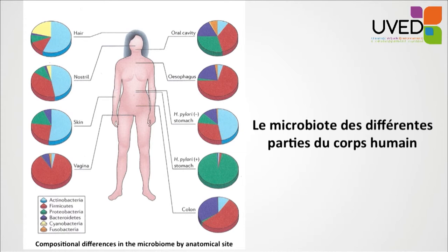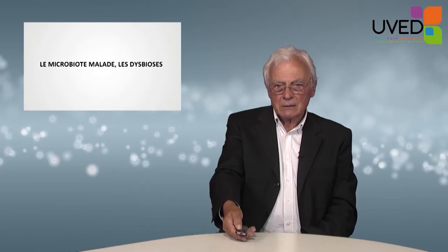The microbiome will depend very much on the location in the body. The major factor for variation is proximity of the location with the external environment. In the woman's vagina or in the oral cavity, composition is very different versus the gut, which underlines one of the main elements — the relationship between the microbiota and the external environment.